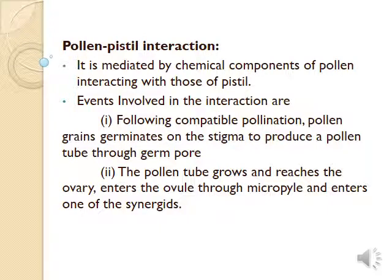Pollen-pistil interaction: we cannot guarantee whether the pistil receives the right type of pollen. The pollen-pistil has the ability to recognize whether it is the right or wrong type of pollen. If it is the right type, the pistil accepts the pollen and promotes pollination events, leading to fertilization. If the pollen is of the wrong type, the pistil rejects it by preventing pollen germination on the stigma. This acceptance and rejection happens because of a continuous chemical dialogue between the pollen grain and the pistil. Pollen absorbs moisture from the stigma, then starts to germinate and develops a pollen tube, which penetrates through the tissues of the stigma and style and finally reaches the ovary.